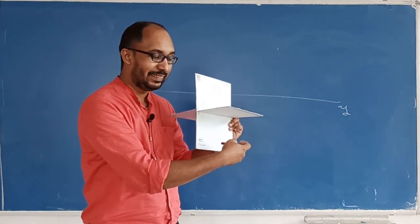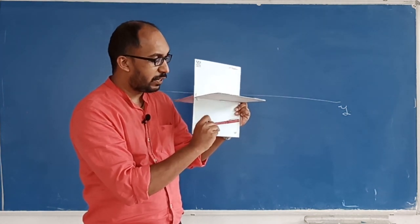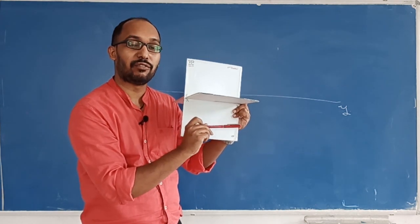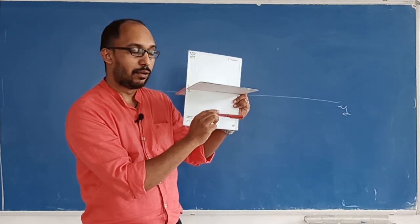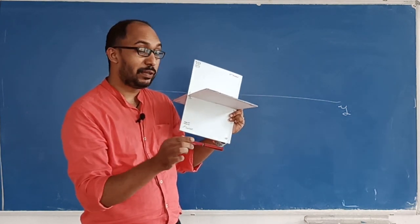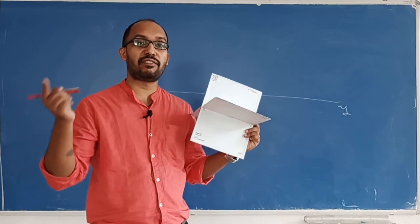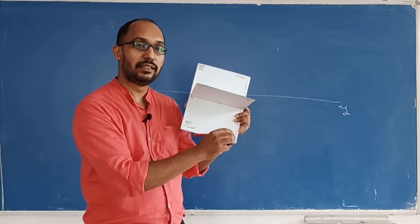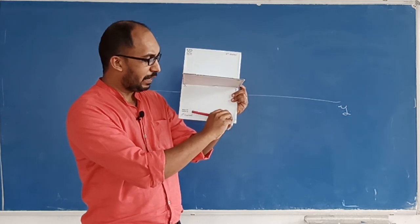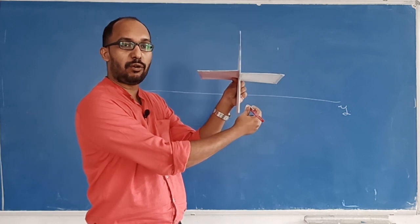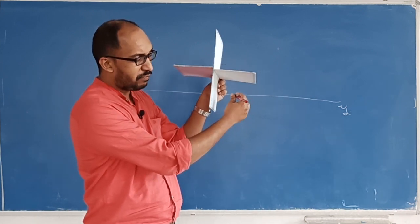Point C is 40 millimeters below HP. Now, end point D is 20 millimeters away from VP — that means it is either in front of VP or behind VP. In the third quadrant, it is behind VP, so point D is 20 millimeters behind VP.